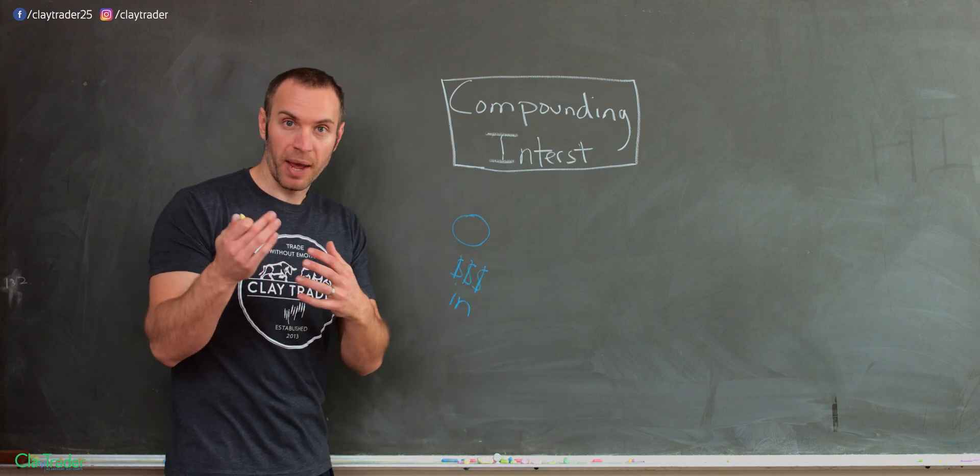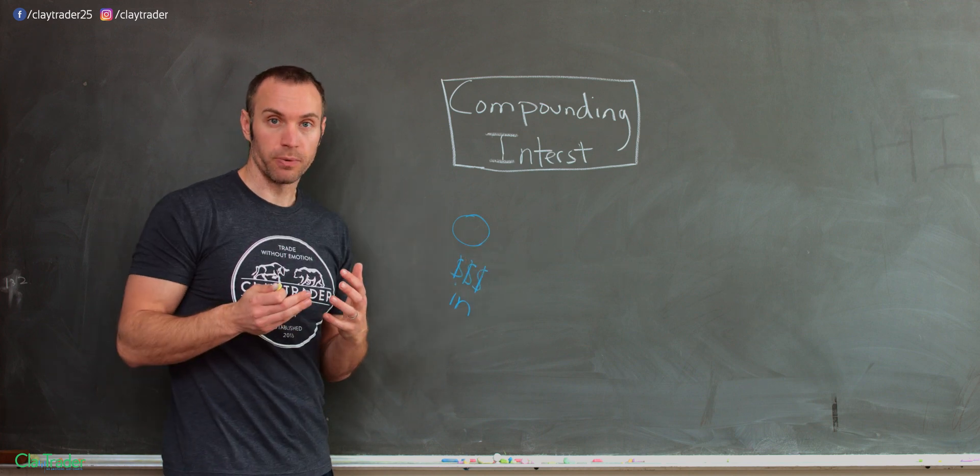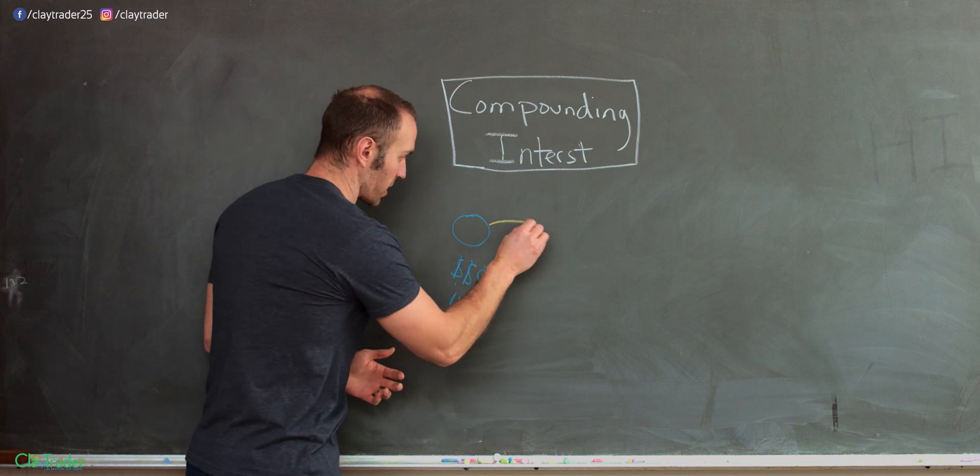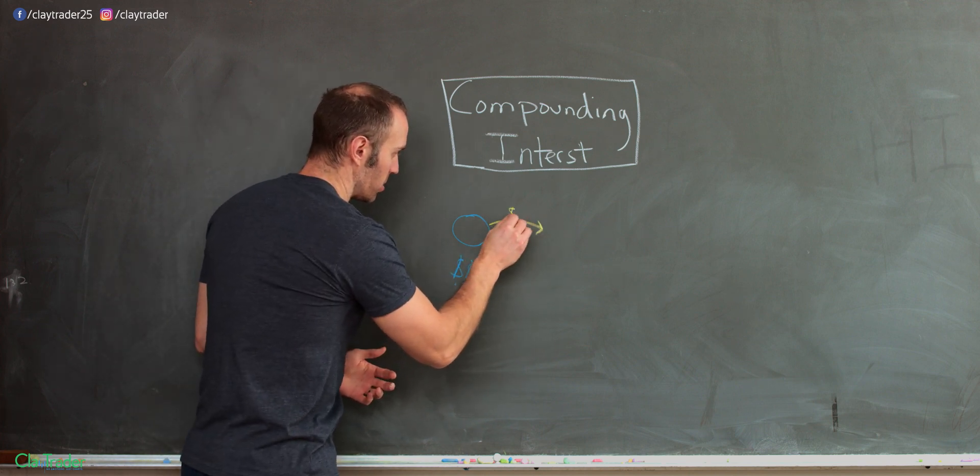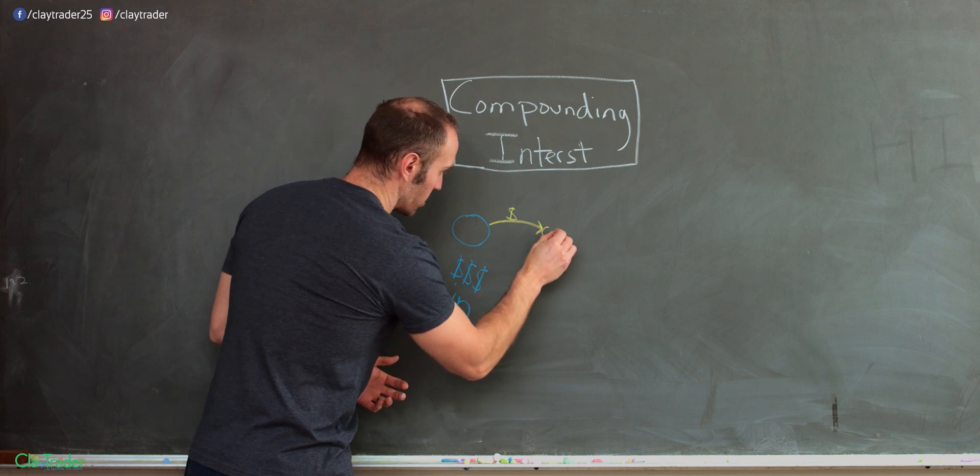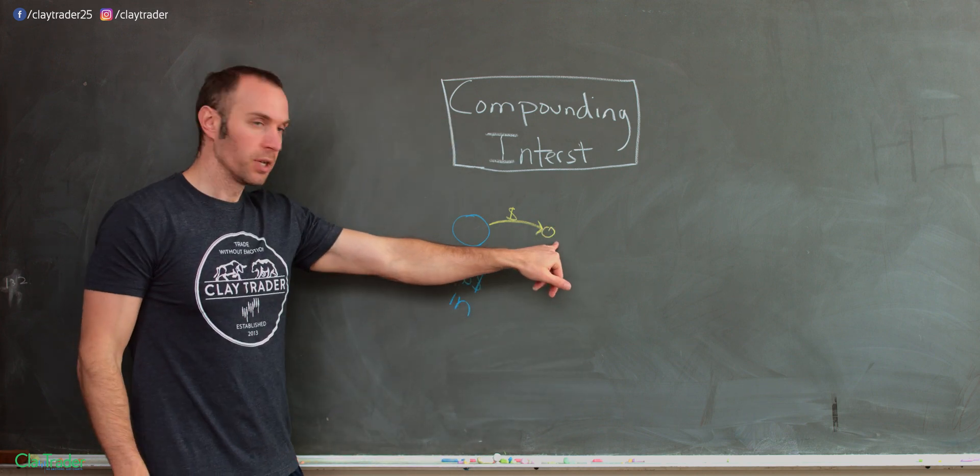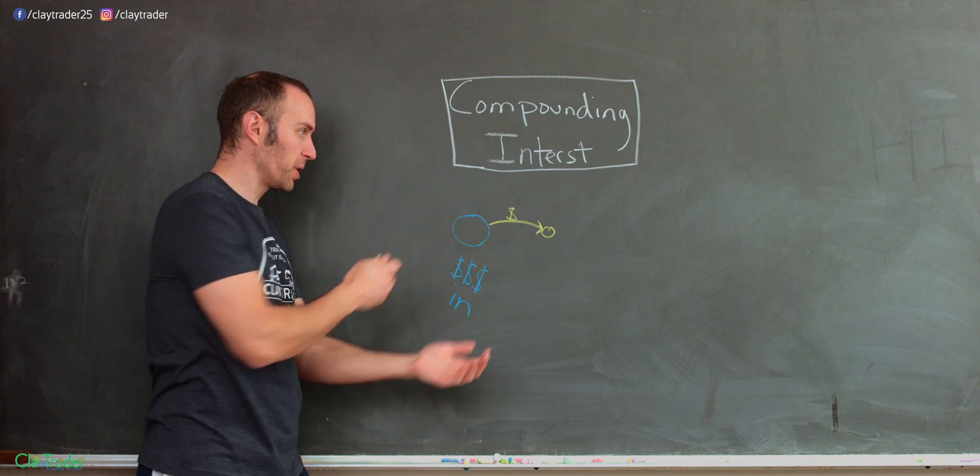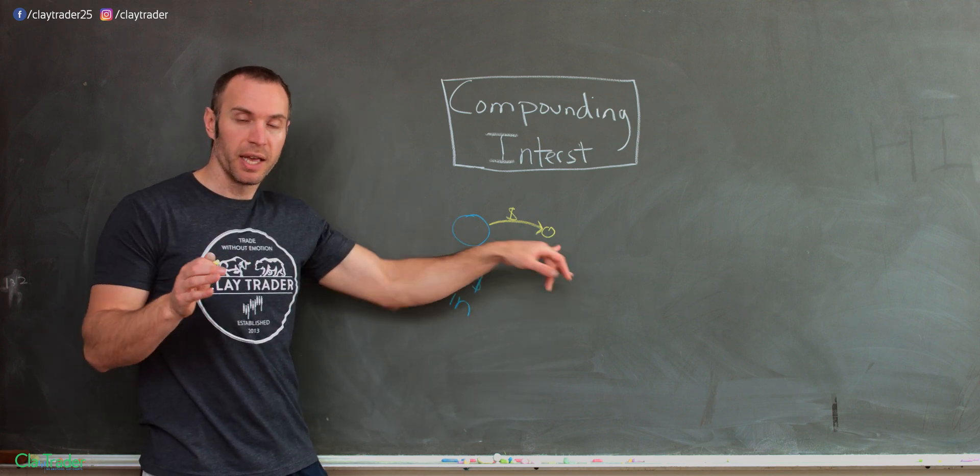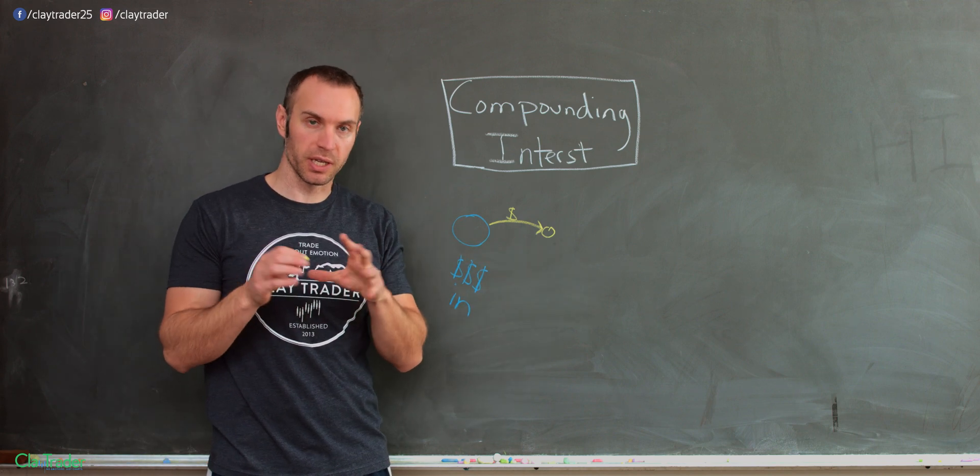So now, how much money are they going to pay you? Well, that depends on the size of this circle. But the point is, they're going to pay you money. And let's say it's that amount of money, that size. So sure, it's not the same exact as how much you put in, but it is a shape. And the way compounding interest works is this.